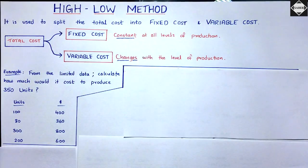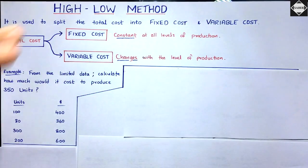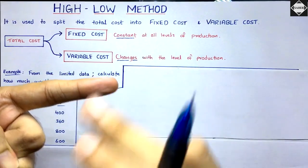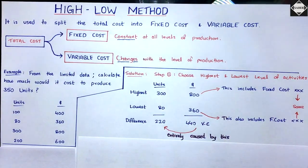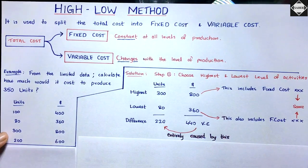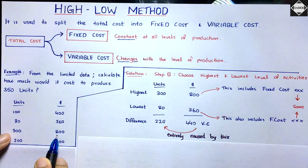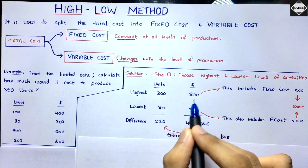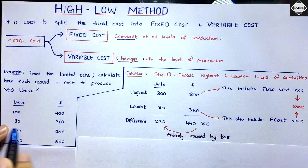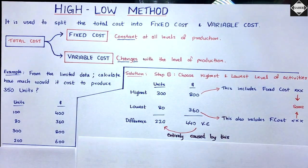In the High-Low Method, Step 1 is to select two extreme data points: the highest activity level and the lowest activity level, based on units — not cost. Here, the highest activity level is 300 units with a cost of $800, and the lowest activity level is 80 units with a cost of $360.